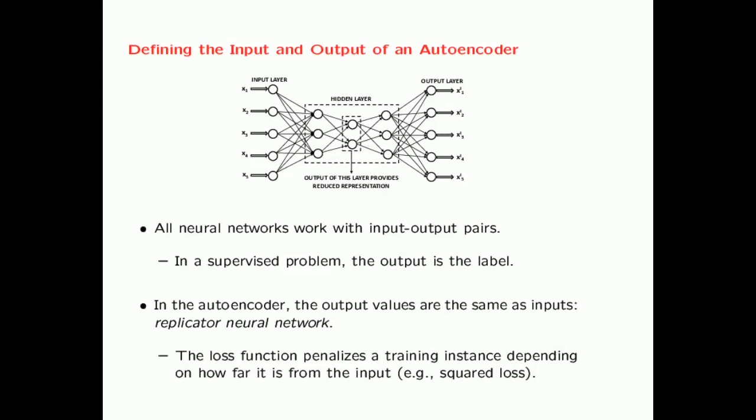What is the best way to learn the regularities in your underlying data distribution? All neural networks work with input-output pairs. In the supervised problem, your output is the class label, and the weights are learned so as to optimize the prediction of the class label. However, in an unsupervised neural network, you are trying to learn how the feature variables are related to one another. In this case, the output is exactly the same as the input — given a d-dimensional data point, you are trying to replicate it using the neural network.